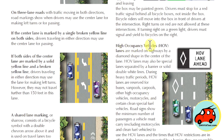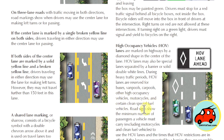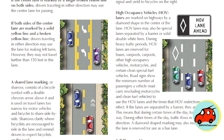HOV lanes are marked on highways by a diamond shape in the center of the lane, and may also be special lanes separated by a barrier or solid double line. During heavy traffic periods, HOV lanes are reserved for buses, van pools, car pools, other high occupancy vehicles, motorcycles, and certain clean-fuel specialty vehicles. If lanes are separated by a barrier, they are reversible — during certain times of the day traffic flows one way, and during other times it flows the opposite direction. The diamond-shaped markings also indicate a lane reserved for use as a bus lane.